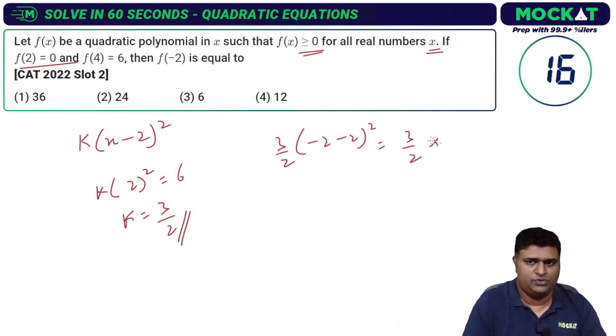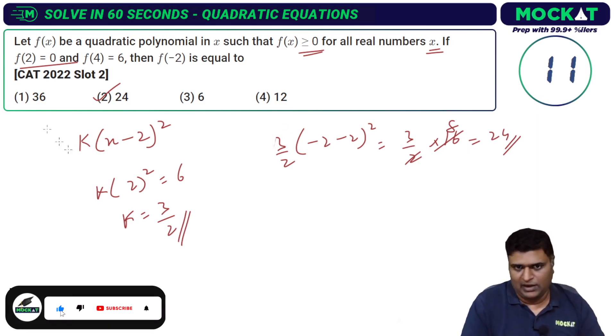So 3 by 2 into 4 square 16, cancel and we get 24. Option 2 over here becomes the answer for this question.